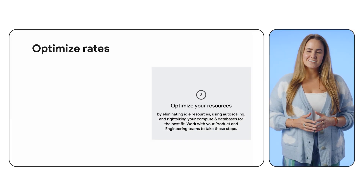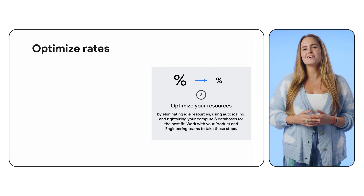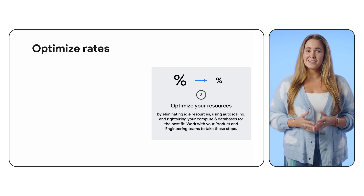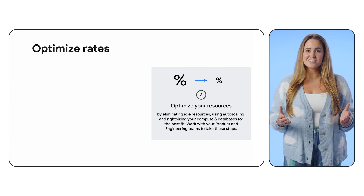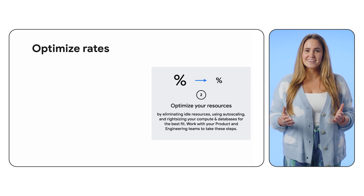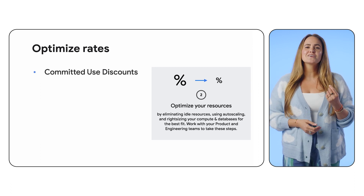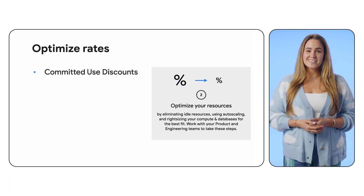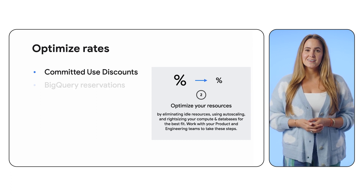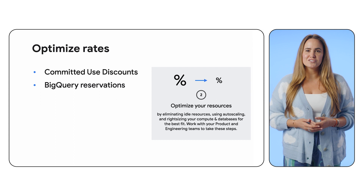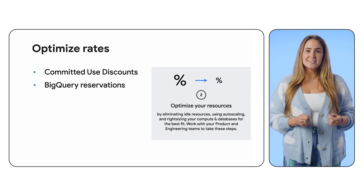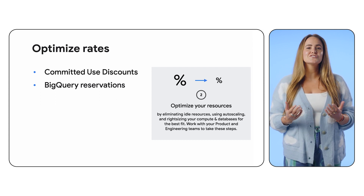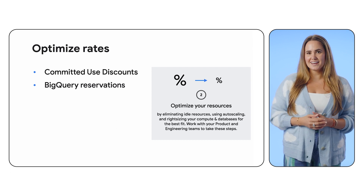The next area for cost and value optimization is optimizing your rates. Could you potentially be paying different rates for the same resources you're using? For example, with committed use discounts for your predictable workloads, you could realize significant savings. The same goes for BigQuery reservations, where you can consolidate the analytics needs for your organization and centrally make decisions based on the data.